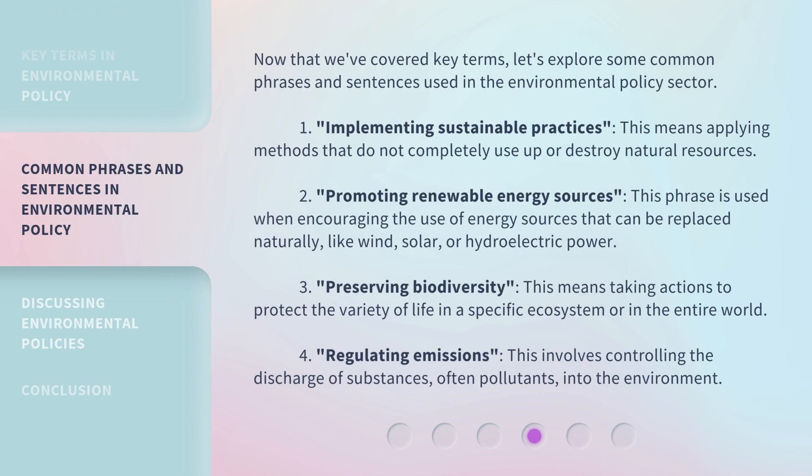Now that we've covered key terms, let's explore some common phrases used in the environmental policy sector. First, implementing sustainable practices means applying methods that do not completely use up or destroy natural resources. Second, promoting renewable energy sources means encouraging the use of energy sources that can be replaced naturally, like wind, solar, or hydroelectric power. Third, preserving biodiversity means taking actions to protect the variety of life in a specific ecosystem or in the entire world. Fourth, regulating emissions involves controlling the discharge of substances, often pollutants, into the environment.